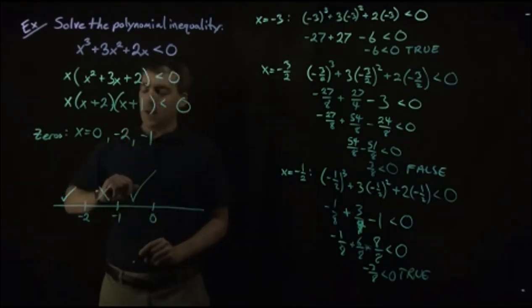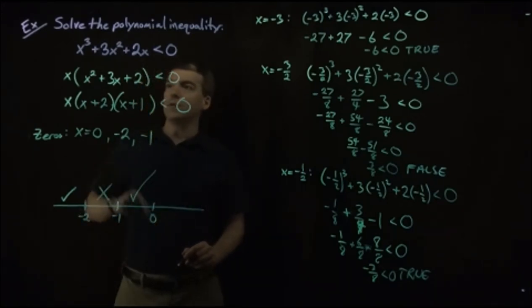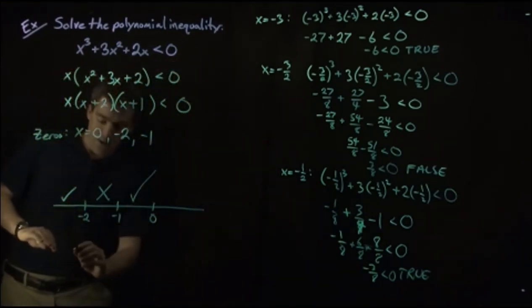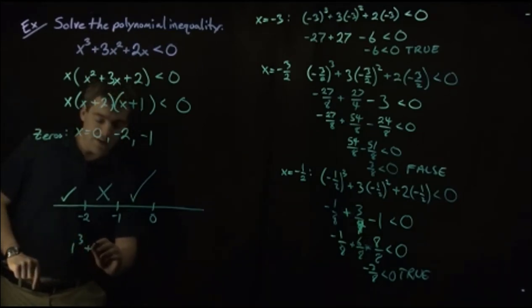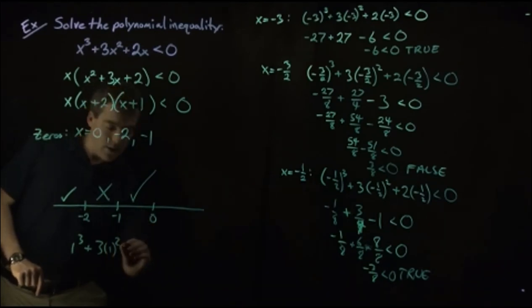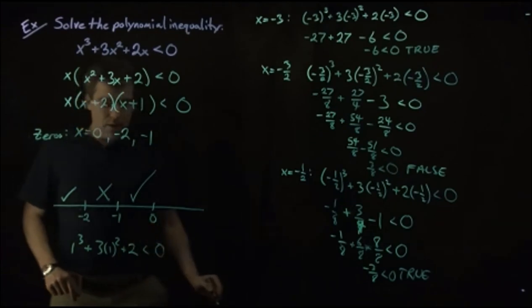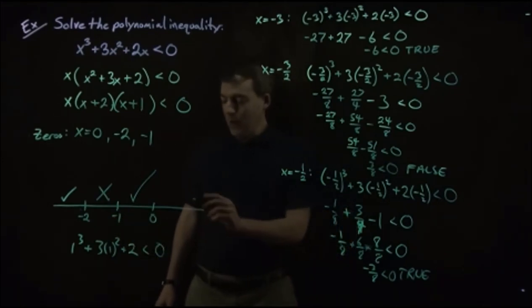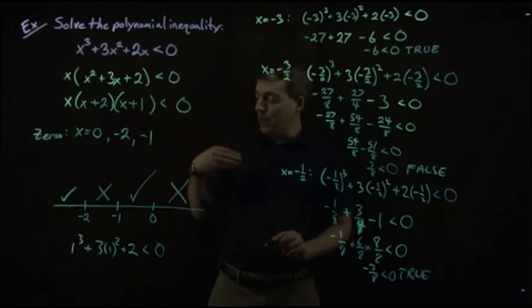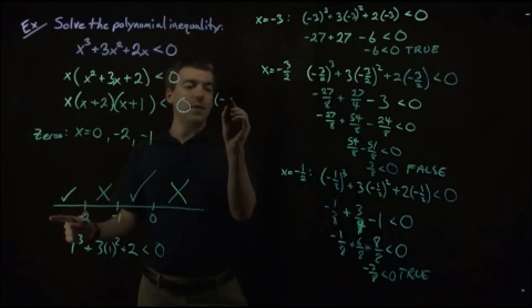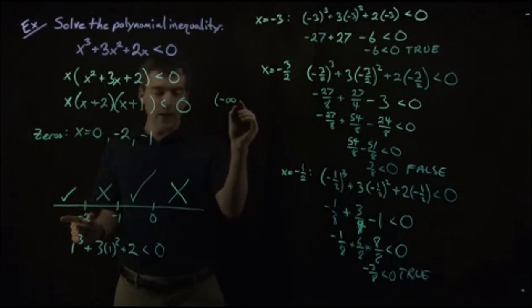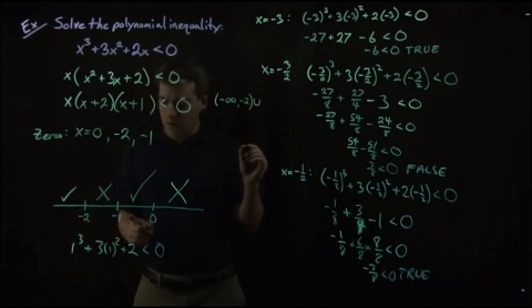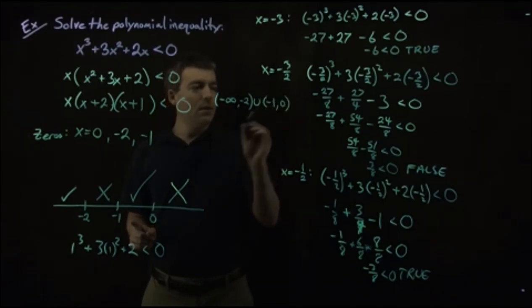We need to test one more point — a number between 0 and infinity. We'll use 1: 1 cubed plus 3 times 1 squared plus 2. All those numbers are positive, so adding them gives a positive result — we throw this interval out. The solution to this inequality is the interval negative infinity to negative 2, union negative 1 to 0, both in parentheses because we have a strict inequality.